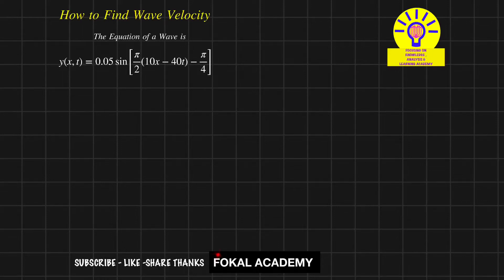Hi everyone, welcome to Focal Academy. In this problem, we'll see how to find wave velocity for the given wave equation. The equation given is y(x,t) = 0.05 sin[π/2(10x - 4t) - π/4]. First, we'll simplify this part.